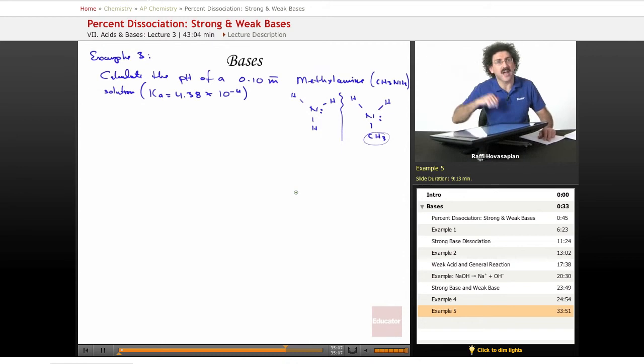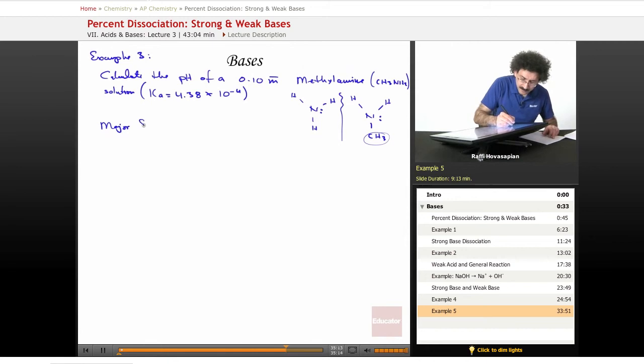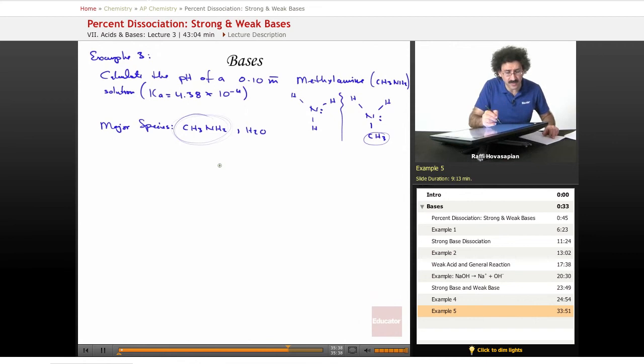It's a base, pulls a hydrogen off the water to produce hydroxide. Let's write our major species. We have CH3NH2 and H2O. 4.38 times 10 to the negative 4 versus 1.0 times 10 to the negative 14, I think we can ignore the 1.0 times 10 to the negative 14 as a source of hydroxide. Most of the hydroxide in this solution is going to come from this. Weak base, but still a stronger base than that.